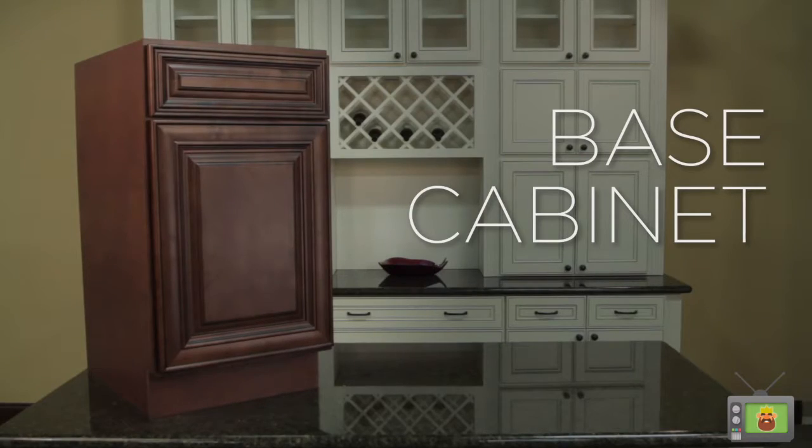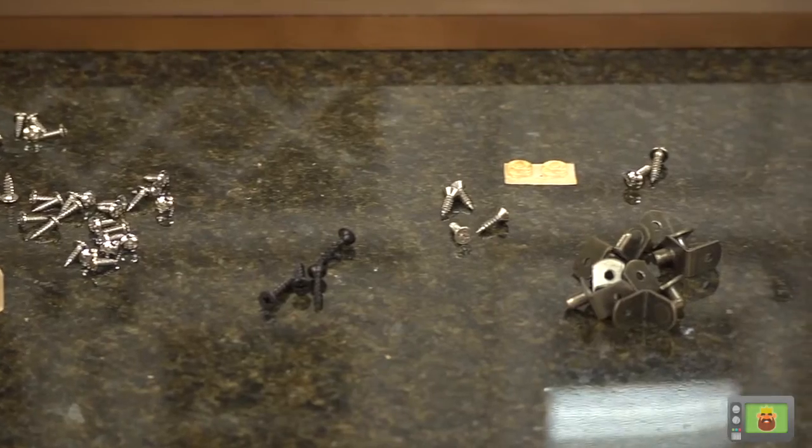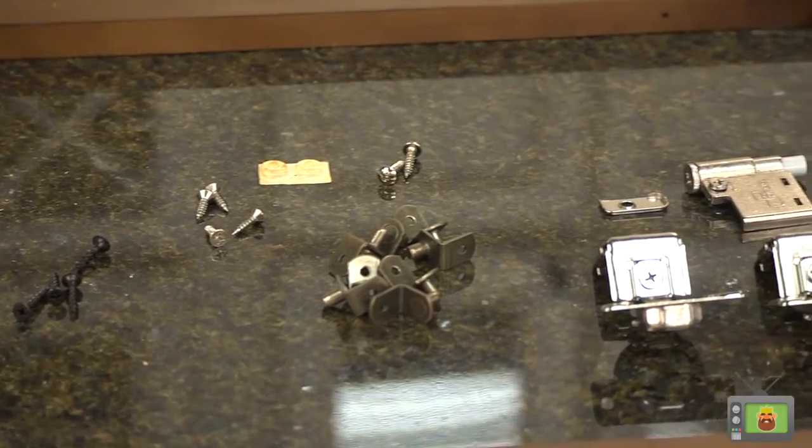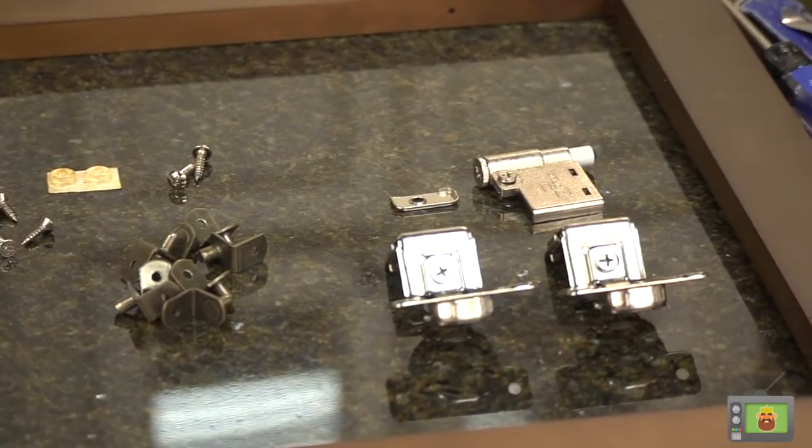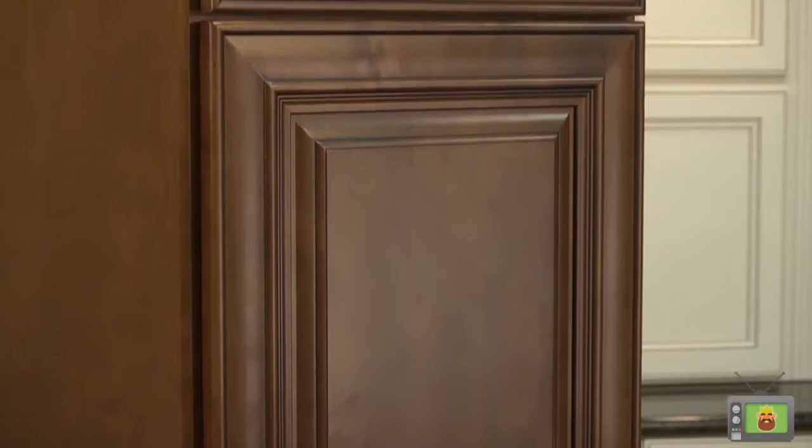There are two methods to construct a base cabinet. First is using the clips and screws provided in the box, which we will show you in this video, and the second method is to use a pneumatic brad nailer and staple gun. Either method will provide the necessary strength and durability for building your cabinets.